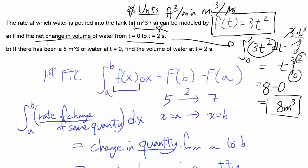Now let's look at B. If there has been 5 cubic meters of water at time of 0, find the volume of water at time of 2. From 0 to 2 seconds, you are adding an additional 8 cubic meters of water into the tank. So if you started with 5 cubic meters, how much water are you going to have at 2 seconds? You're going to have 5 plus 8 or 13 cubic meters at the end of 2 seconds.